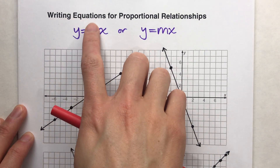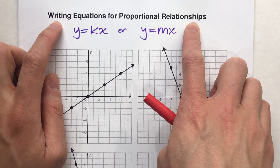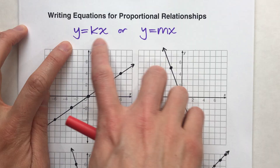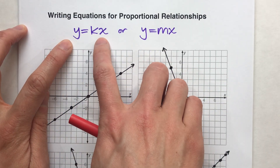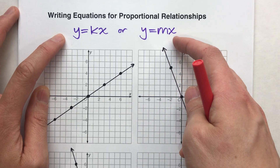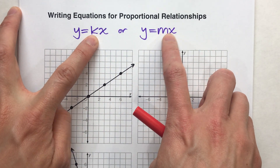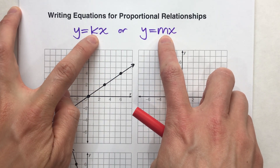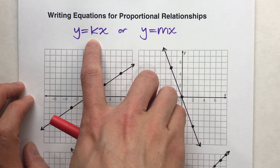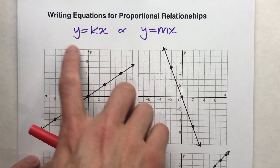Today we are going to be writing equations for proportional relationships. When you learn about proportional relationships, you learn that the general equation can be written in one of two ways: y equals kx, or y equals mx. But these are basically the same — your equation is going to be y equals some number times x. When written as y equals kx, that k stands for the constant of proportionality, which is the unit rate.